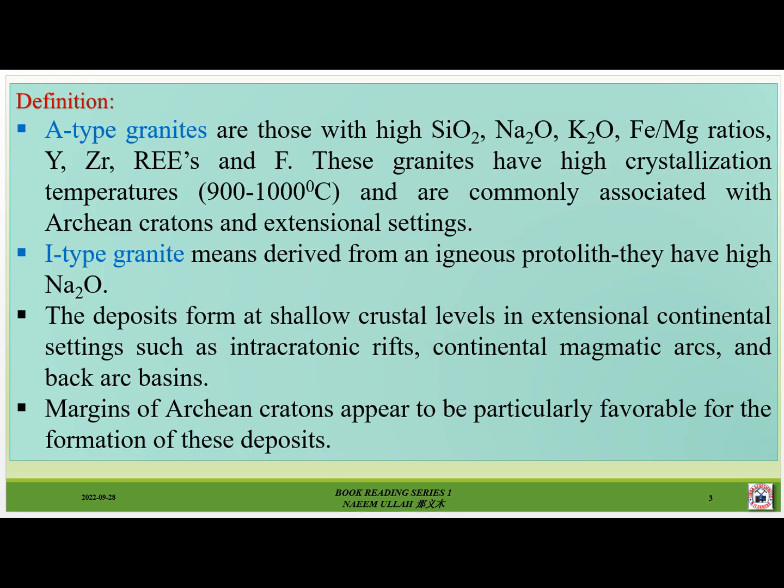A-type granites are those with high SiO2, and high Al2O3 to K2O island to magnesium ratios, with high Zr, rare earth elements, and F. These granites have high crystallization temperatures of 900 to 1000 degrees centigrade and are commonly associated with Archean cratons and extensional settings. I-type granites are those derived from an igneous protolith and have high Na2O. The deposits form at shallow crustal levels in extensional continental settings such as intracratonic rifts, continental magmatic arcs, and back-arc passing margins. Archean cratons appear to be particularly favorable for the formation of these deposits.